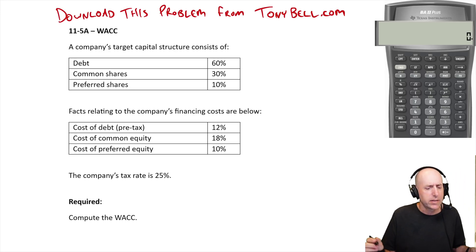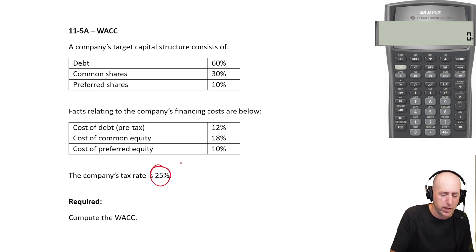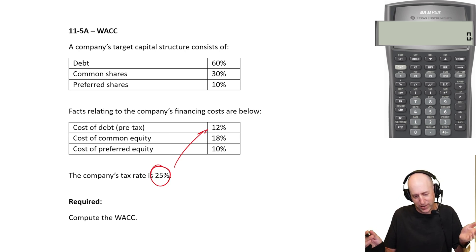Let's run through question 11.5A. The company's target capital structure consists of 60% debt, 30% common shares, and 10% preferred shares. Facts are below: cost of debt is 12%, common equity 18%, preferred equity 10%, and the tax rate is 25%. Our cost of debt isn't 12% - well, our pre-tax cost is 12%.